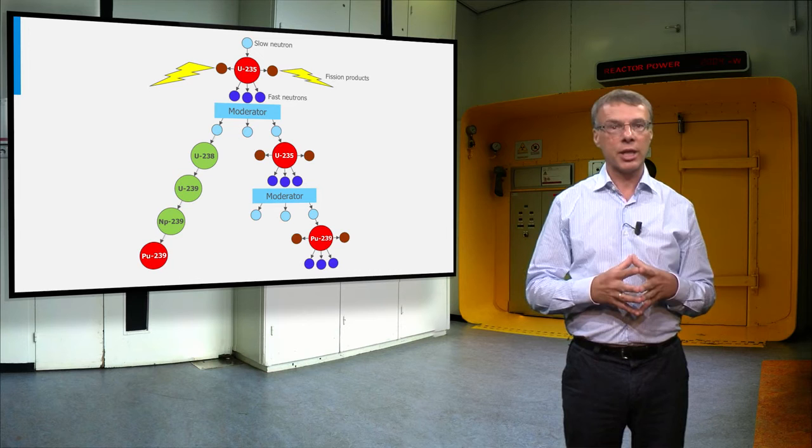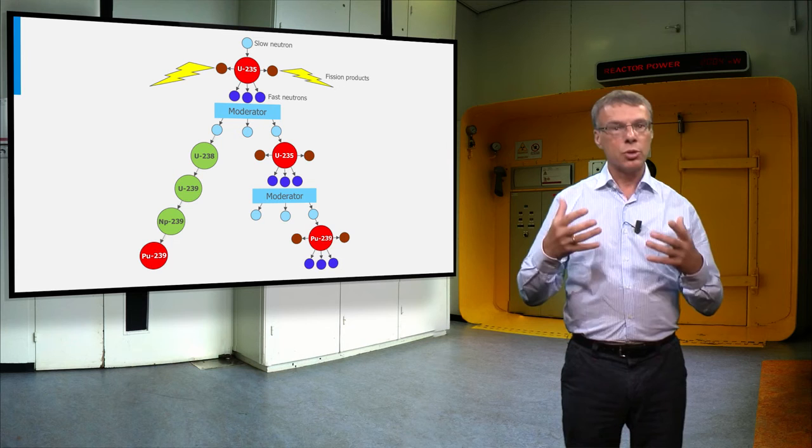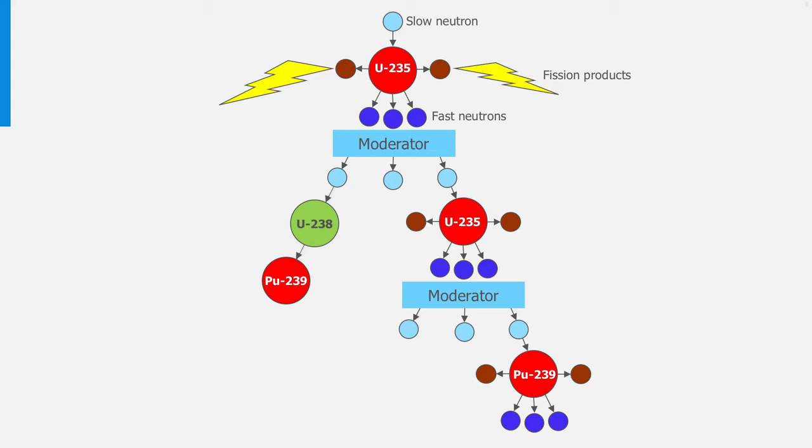Here we show the principle of the fission chain reaction again. Let's first simplify the scheme a bit by omitting in the plot the two intermediate decay steps from uranium-238 to plutonium-239.